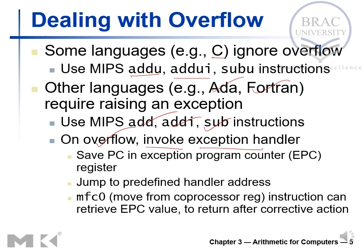When MIPS uses signed instructions and overflow occurs, the system invokes an exception handler. Before that, the memory address of the instruction that generated the overflow is saved in the EPC register — the Exception Program Counter. The program counter tracks which instructions to execute, and the EPC now stores the address of the overflowing instruction. Next, a jump instruction is executed, similar to a procedure call, and the program transfers to the exception handler, which handles and overcomes the exception.